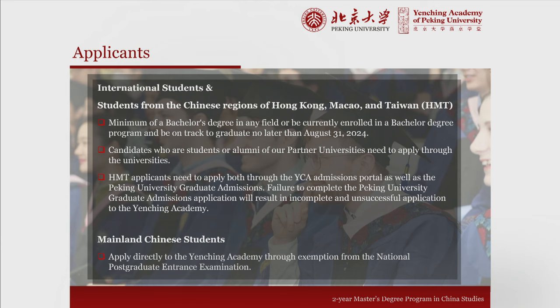We essentially have three varied paths for application to the program. There is a path for international students, a path for students from Hong Kong, Macau, and Taiwan, and an application path for scholars from mainland China. Scholars from mainland China apply through the process known as exemption from the national postgraduate entrance examination. International scholars and scholars from Hong Kong, Macau, and Taiwan submit applications directly to Yanjing Academy at our application portal. Applicants from Hong Kong, Macau, and Taiwan must also submit applications to the PKU graduate school application portal.